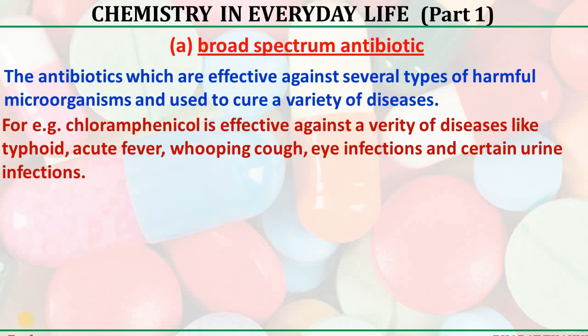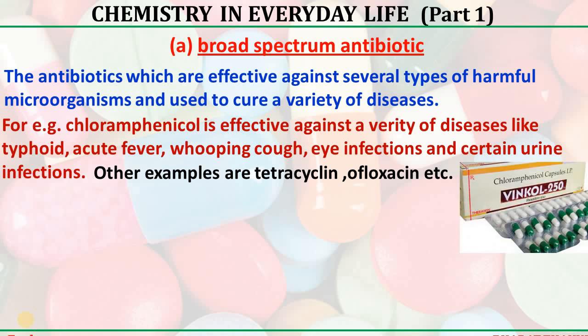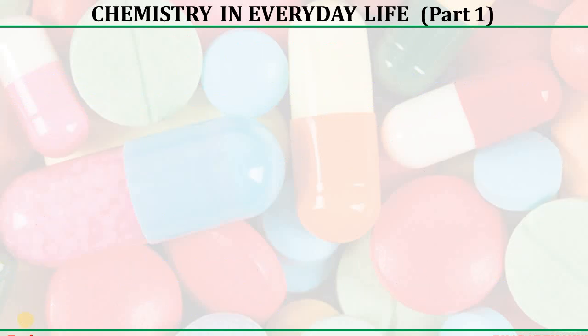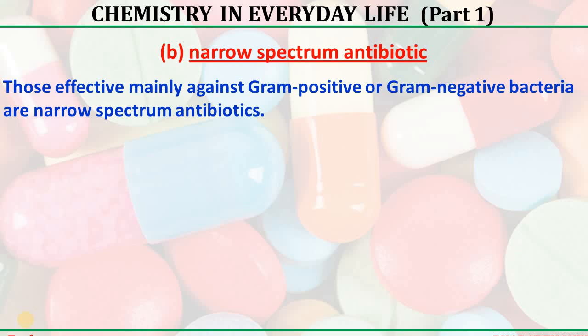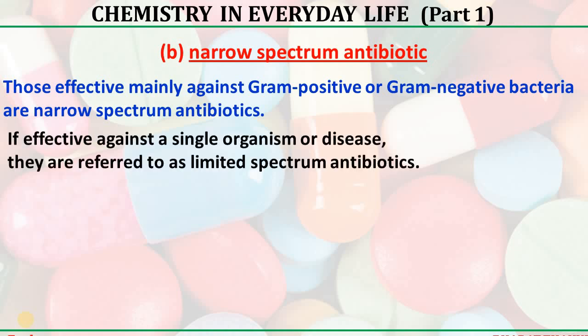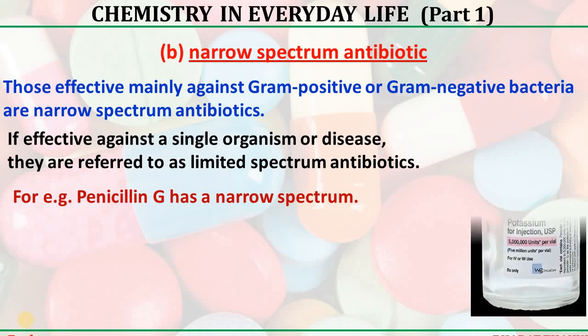For example, chloramphenicol is effective against a variety of diseases like typhoid, typhus fever, whooping cough, eye infections, and certain urinary infections. Tetracycline and ofloxacin are more broad-spectrum antibiotics. Narrow-spectrum antibiotics are those which are effective against only a few gram-positive or gram-negative bacteria. They are effective against a single organism or disease and are referred to as limited-spectrum antibiotics. For example, penicillin G is a narrow-spectrum antibiotic.